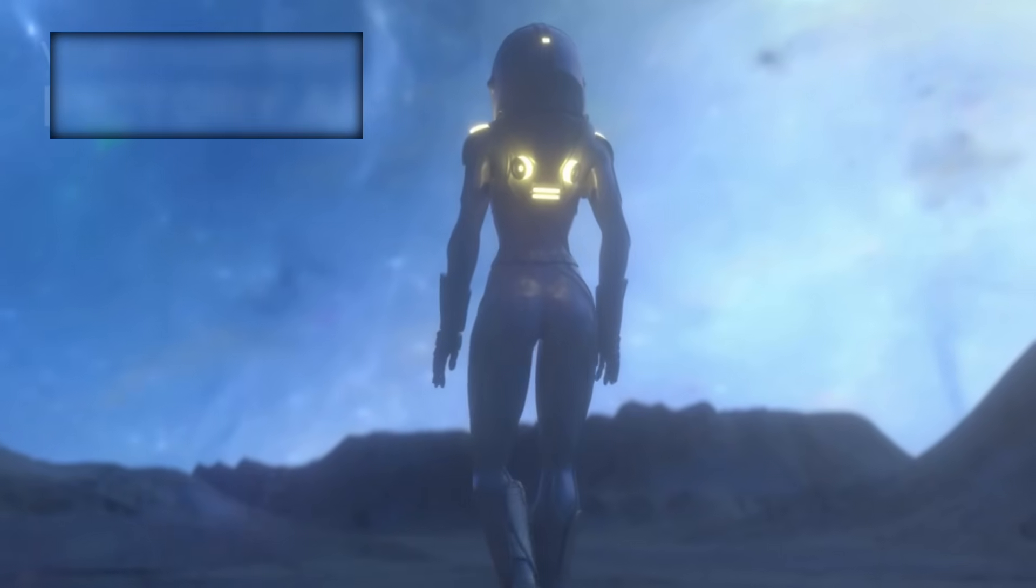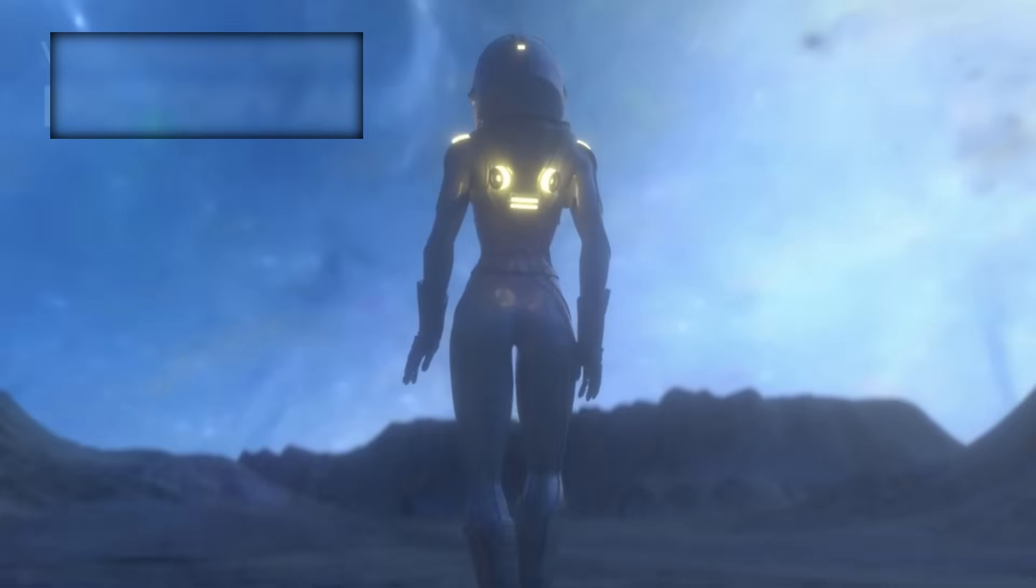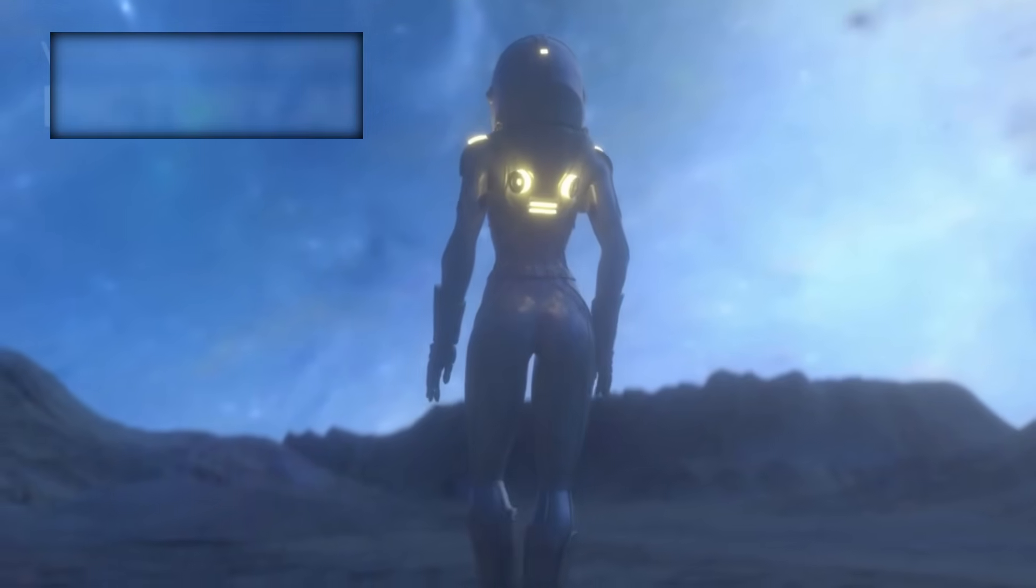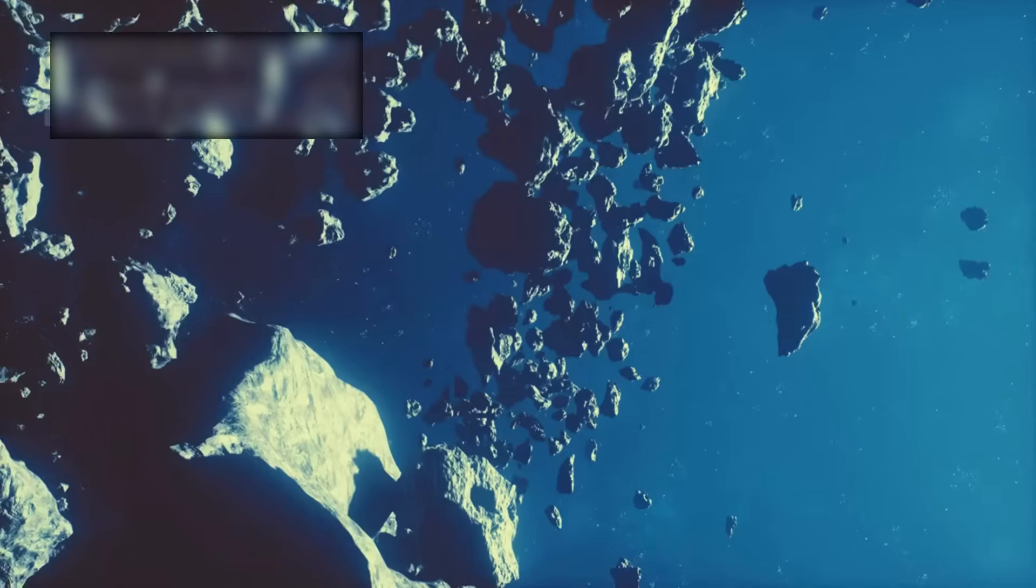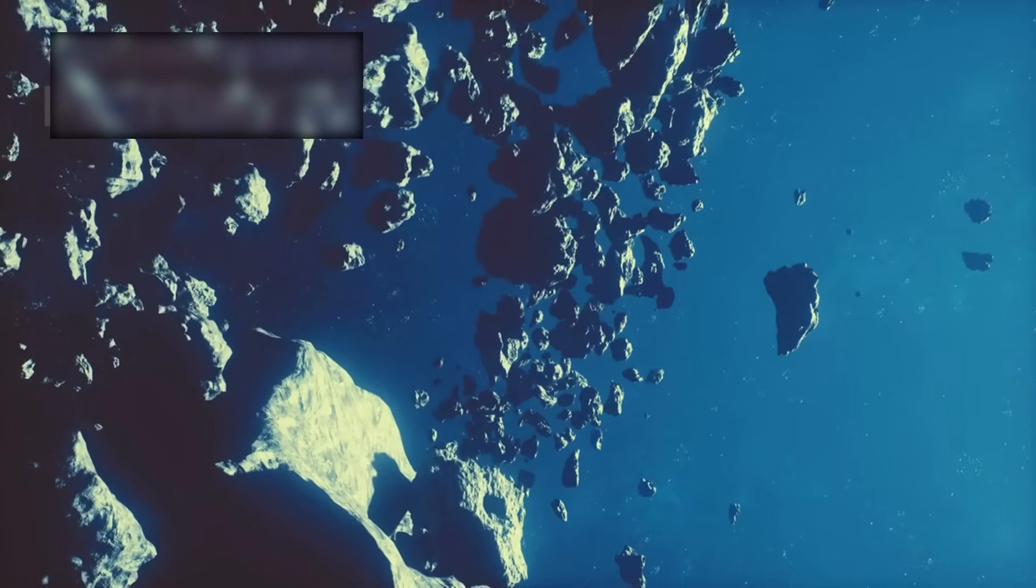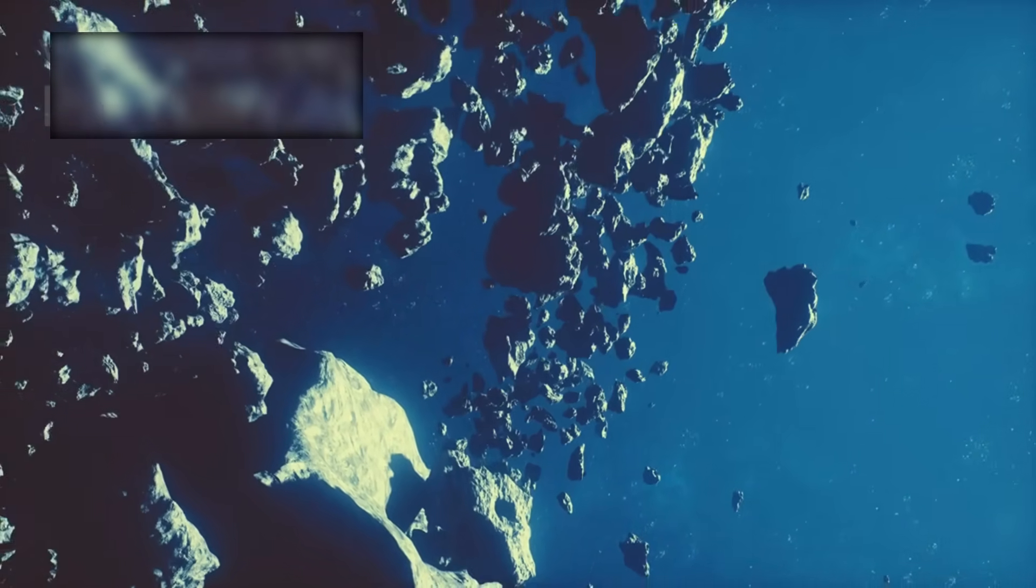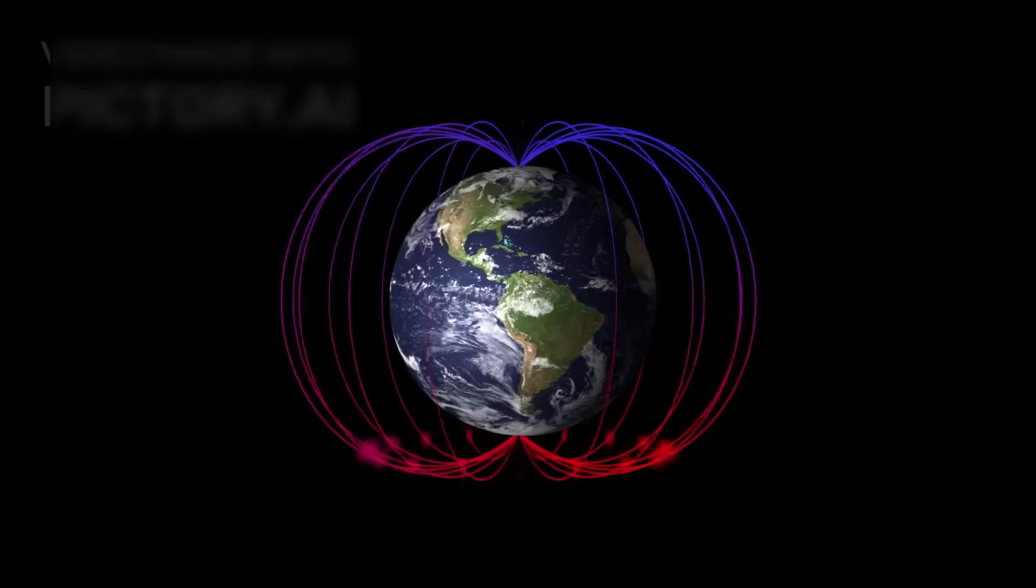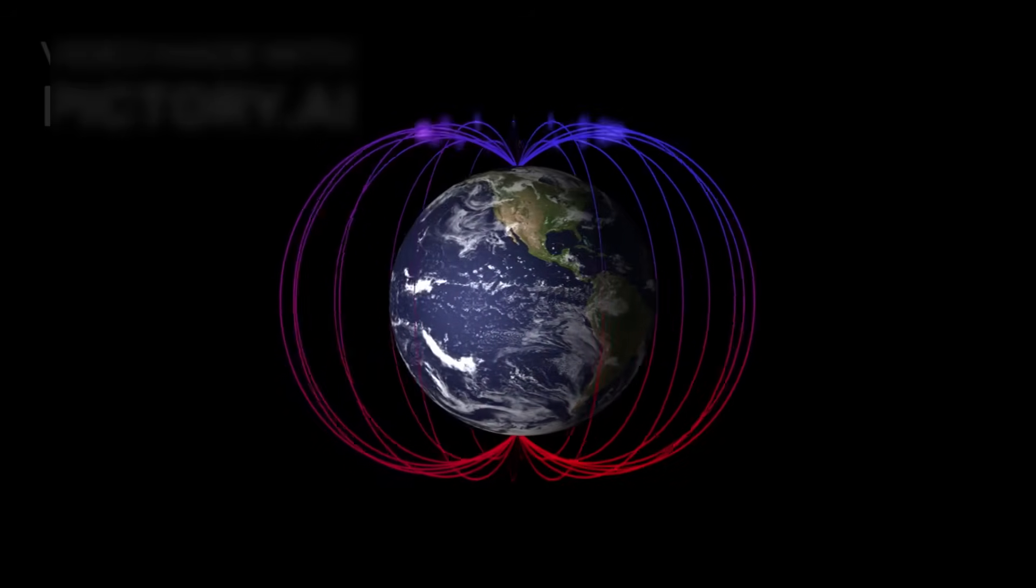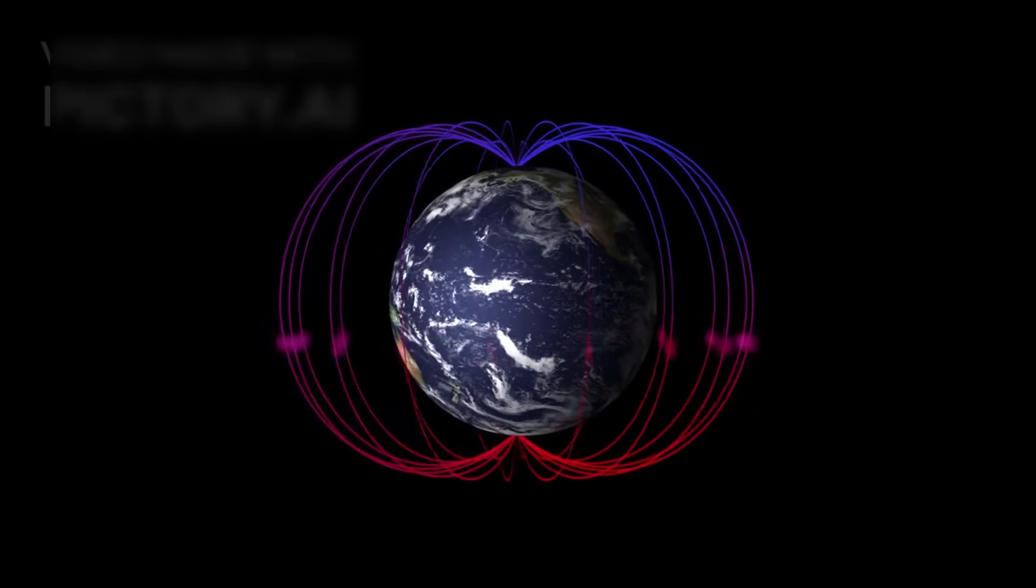From this revelation, a whisper began circulating among theorists and mission insiders. What if the heliosphere is not just a protective bubble? What if it functions like a threshold, one that responds when crossed? The sharpness of the transition, the sudden spikes in radiation, the strange magnetic alignment, it all suggested something more than a simple boundary.